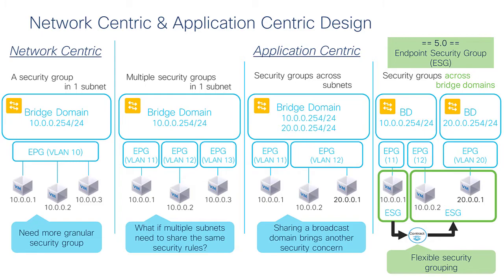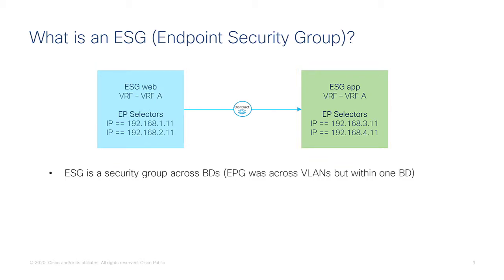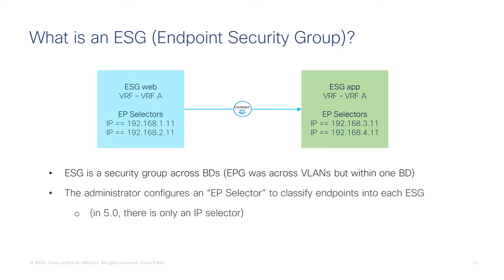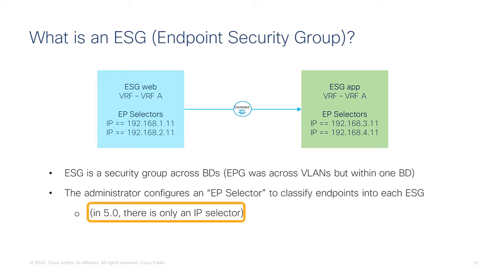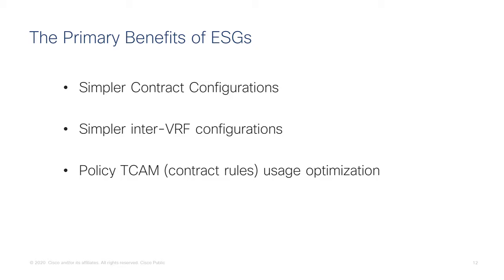Looking at it differently: the security zone called 'web' and the one called 'app' are both in the same VRF, but you could also have them in different VRFs since ESGs also work with inter-VRF contracts. The way you assign workloads to an ESG is by using selectors, just like micro-segmentation. As of the ACI 5.0 release, you can only define this based on IP selectors — slash 32s or subnets.